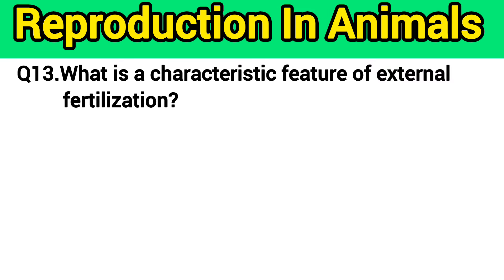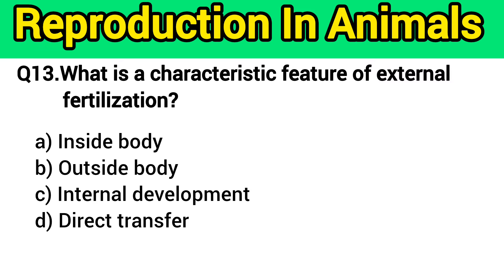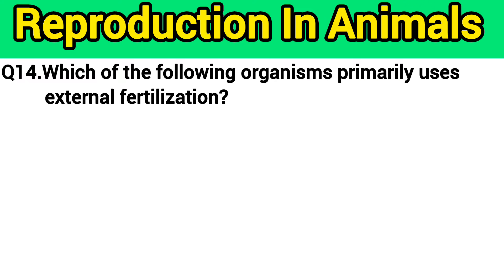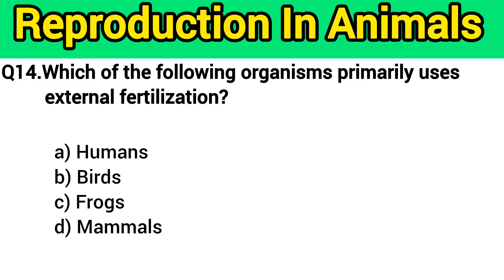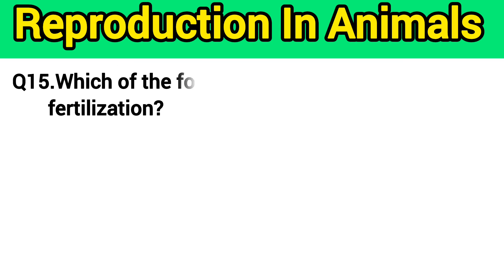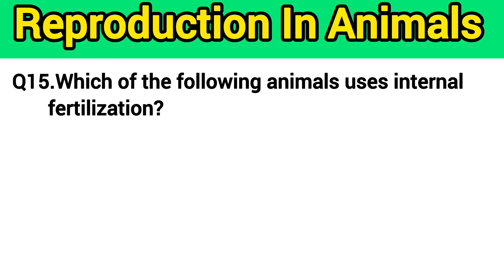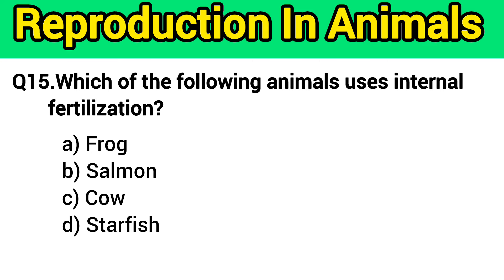Question number 13: What is the characteristic feature of external fertilization? The right answer is option B — outside the body. Question number 14: Which of the following organisms primarily uses external fertilization? The right answer is option C — frogs. Question number 15: Which of the following animals uses internal fertilization? The right answer is option C — cow.